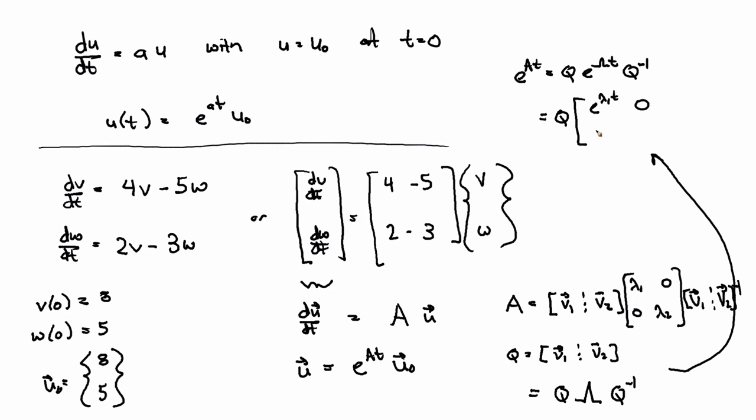And e to the lambda T is just [e to the lambda_1 T, 0; 0, e to the lambda_2 T], Q inverse. All right.